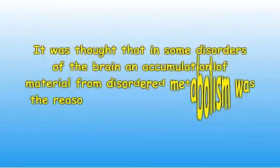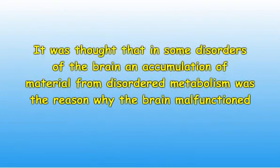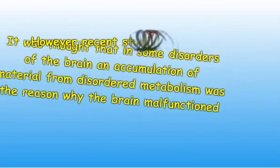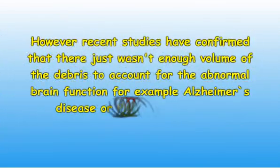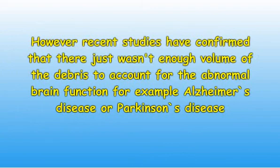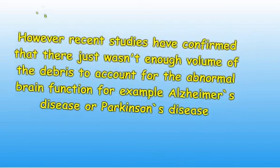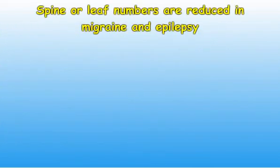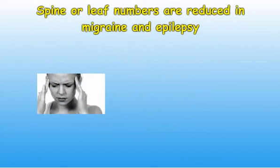It was thought that in some disorders of the brain, an accumulation of material from disordered metabolism was the reason why the brain malfunctioned. However, recent studies have confirmed that there just was not enough volume of the debris to account for the abnormal brain function, for example in Alzheimer's disease and Parkinson's disease. Reduction in spine or leaf numbers are now being noted in many brain disorders such as migraine and epilepsy.